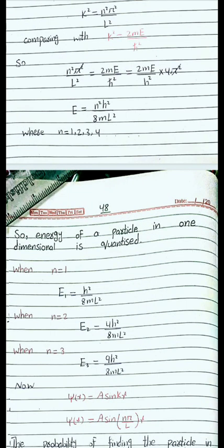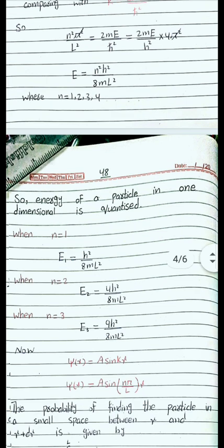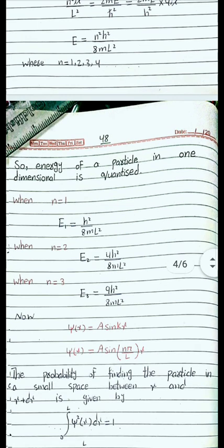In an infinite potential well, the energy is quantized. Quantized means energy varies in a discrete manner rather than continuously.